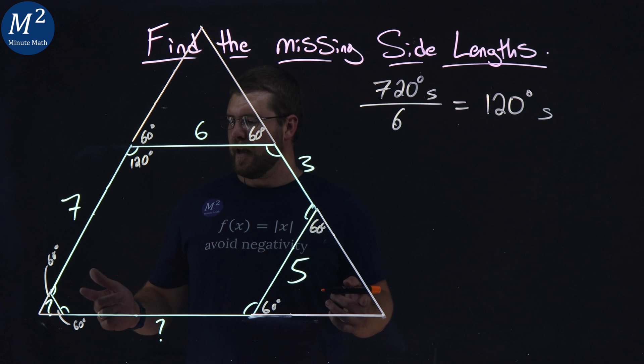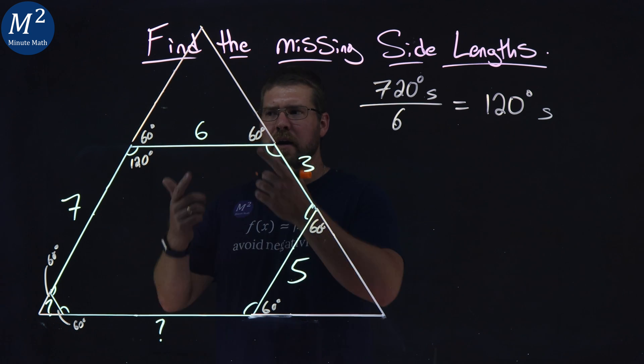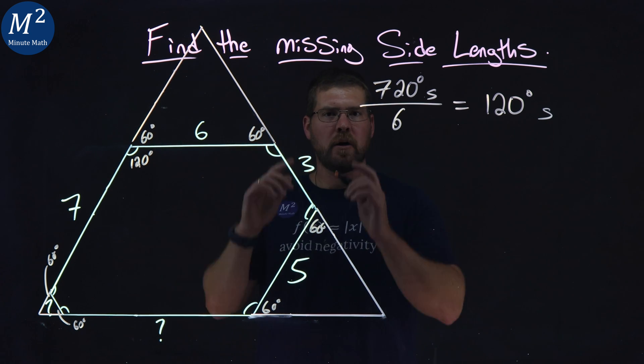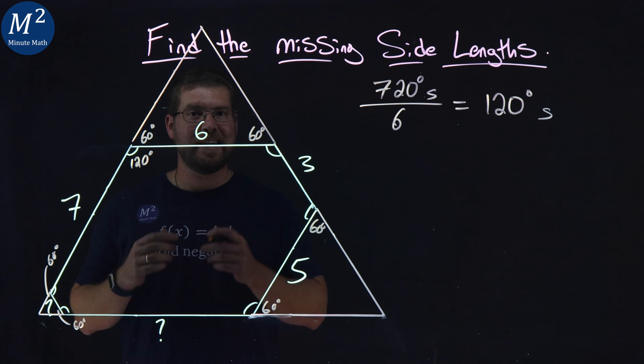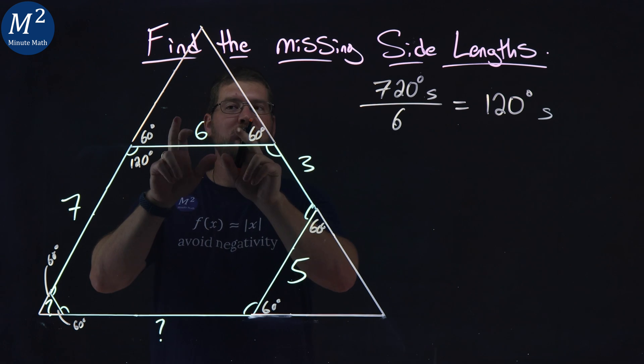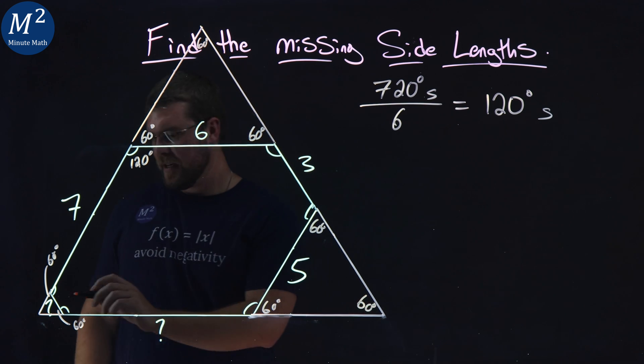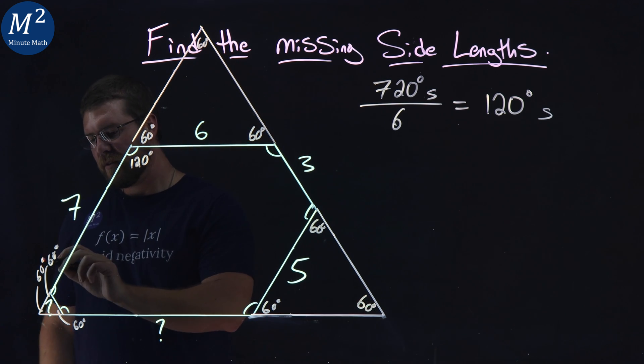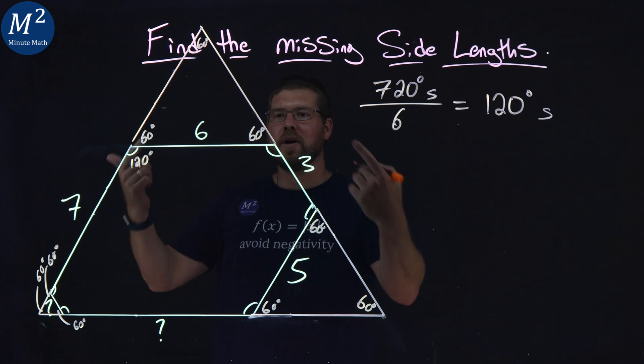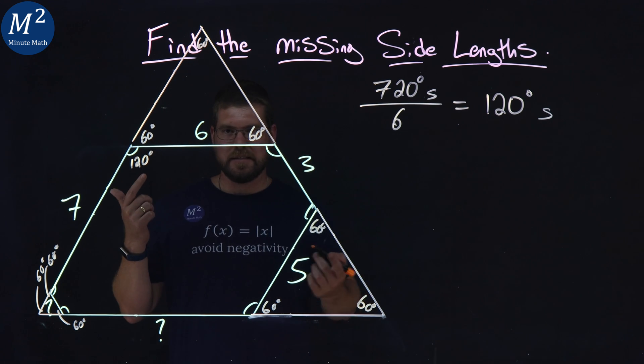Now, can we find the missing angles in the corners of each of these triangles? Of course we can. We know all triangles add up to 180 degrees. 60, 60 makes 120. So this one's also 60 degrees. Same thing happens here. 60 degrees. And again, 60 degrees. So each corner of the triangle is 60 degrees.